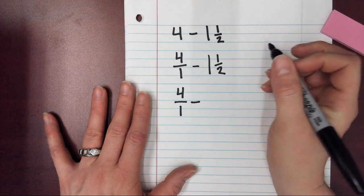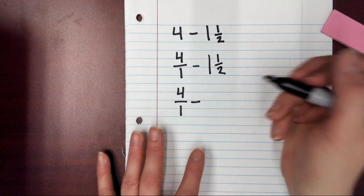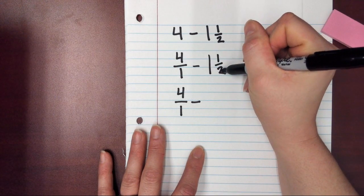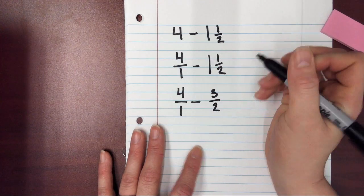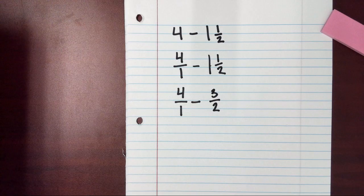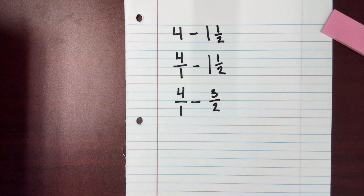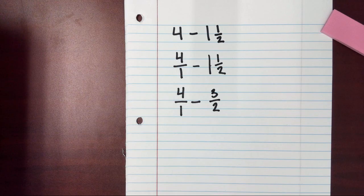I'm going to take my mixed number and turn it into an improper fraction as well. I'm going to bring down my 4 over 1. And I'm going to turn my mixed number into an improper fraction. So I'm going to take my 2 times my 1 plus my 1, which is going to give me 3 over 2. And you can see that over here. I've got 1, 2, 3 halves that are equal to my 1 and 1 half. So these are the same, just written in different forms.